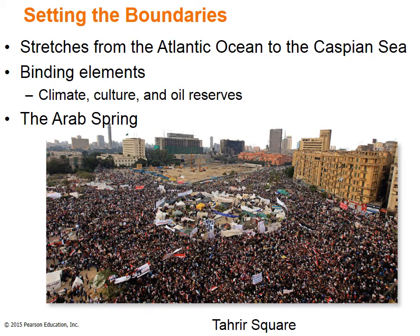Now that we have looked at the continent of Africa south of the Sahara, we will finish with the countries of North as well as Southwest Asia, also called the Middle East. This region spans from the Atlantic Ocean in the west, to the Caspian Sea in the northeast, to the Indian Ocean in the south. Climate, culture, and oil reserves serve as binding elements for this region.